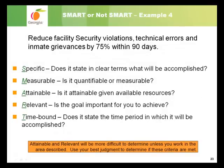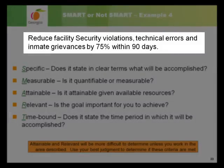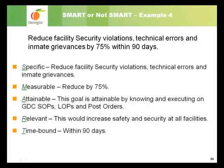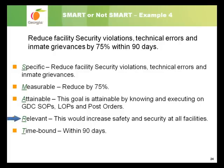Here is a sample goal for a correctional officer with the Department of Corrections: 'Reduce facility security violations, technical errors, and inmate grievances by 75% within 90 days.' Is this goal SMART or not SMART? Pause the presentation to think through each criterion. Example 4 is a SMART goal. It is specific — reduce facility security violations, technical errors, and inmate grievances. It is measurable — reduce by 75%. It is attainable — by knowing and executing on GDC SOPs, LOPs, and post orders. It is relevant — this would increase safety and security at all facilities. And it is time-bound — within 90 days.